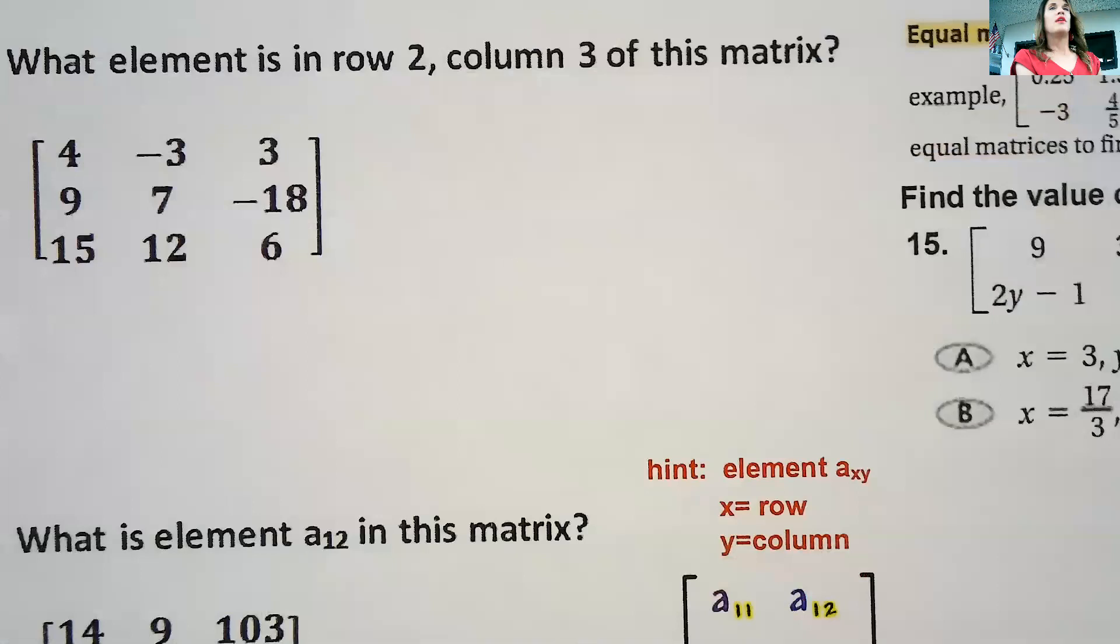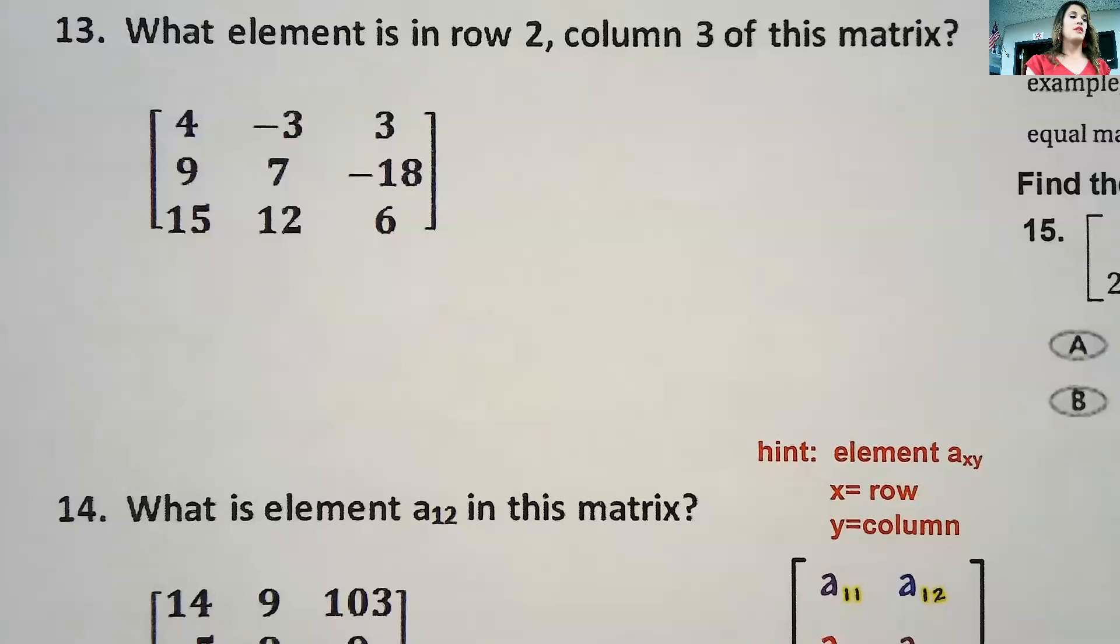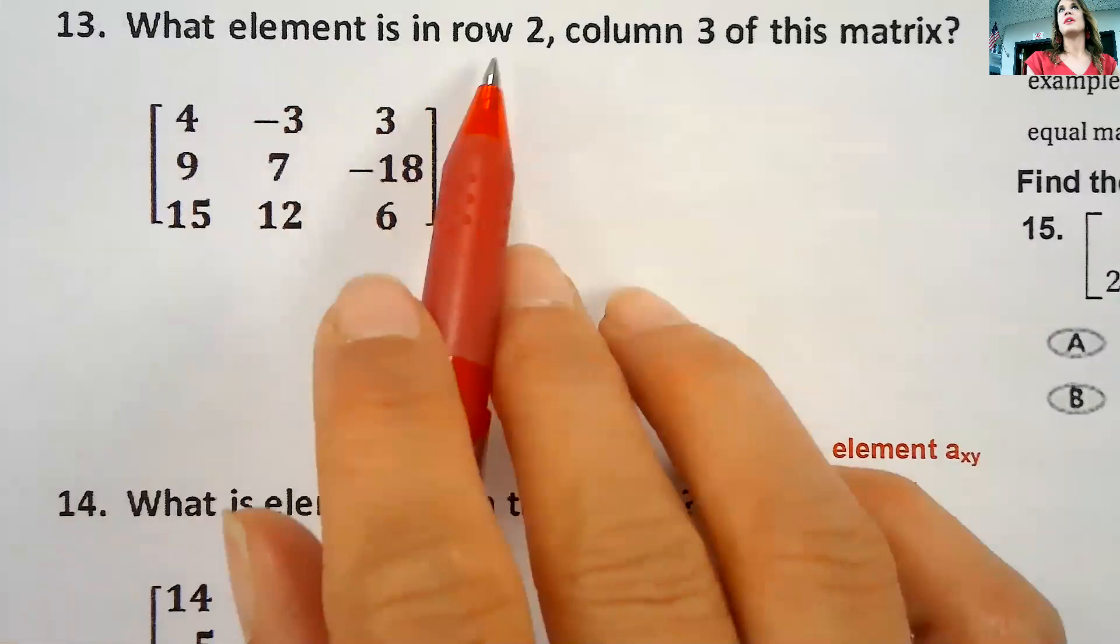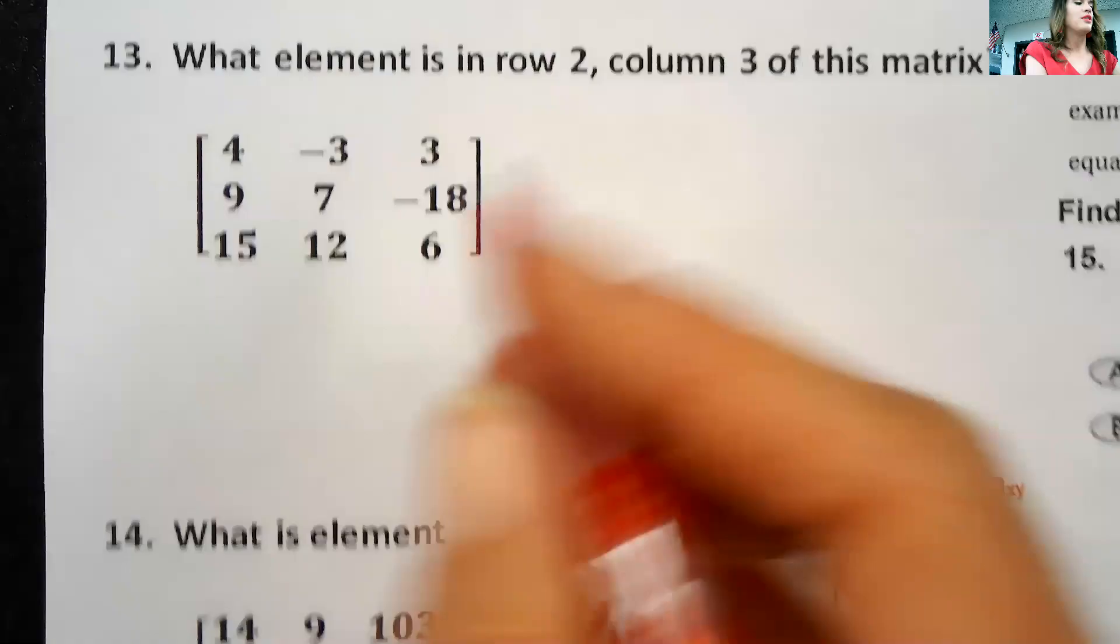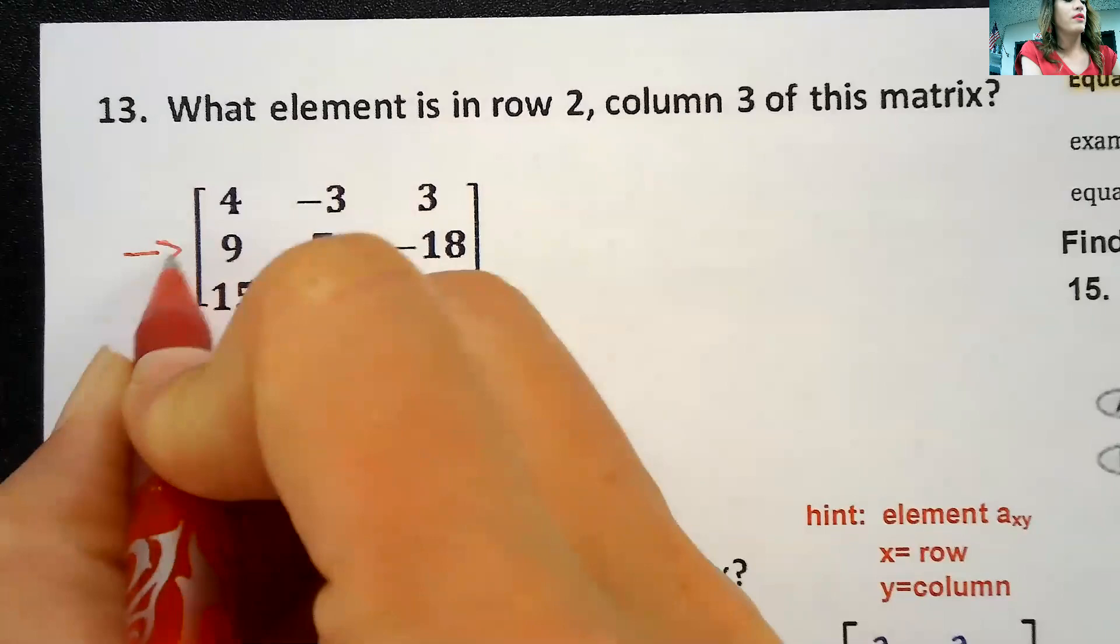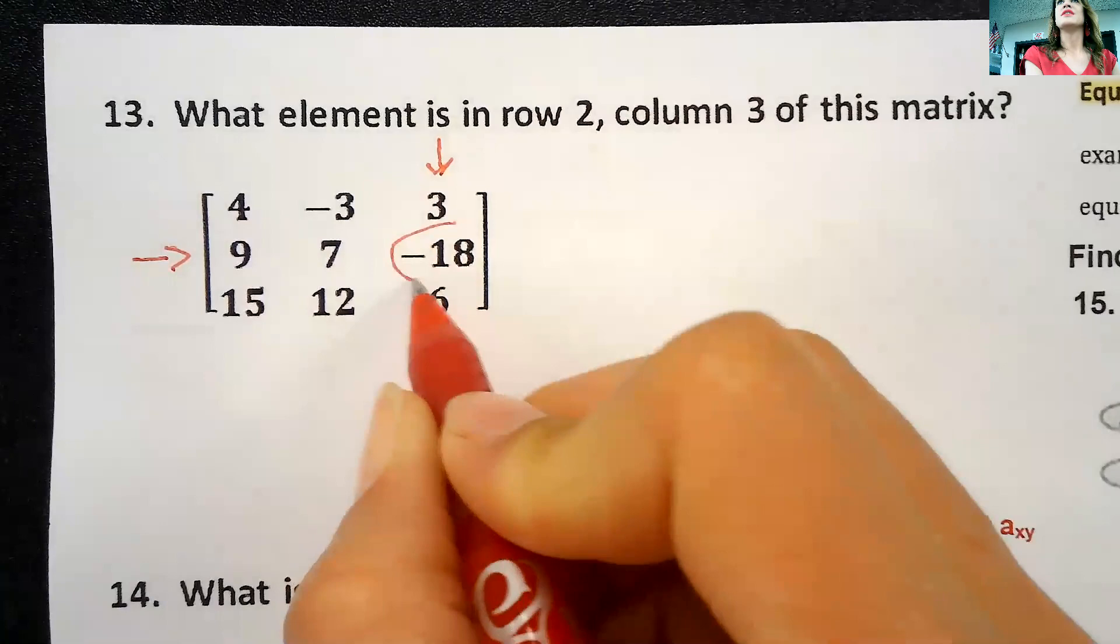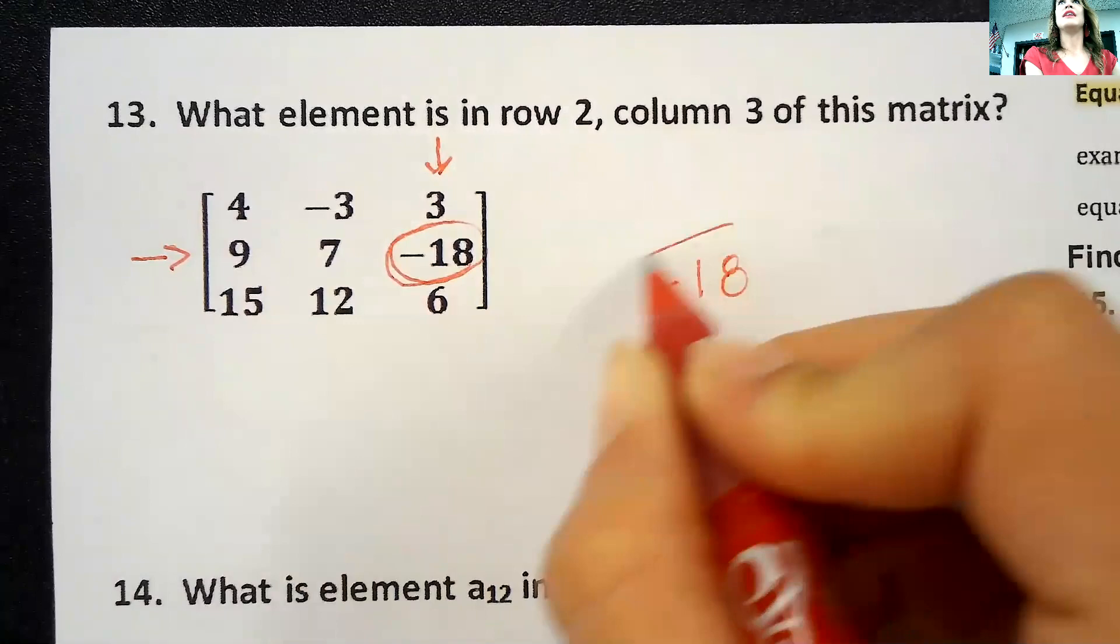You're going to get questions, you're going to do quizzes to practice this stuff on, and you're going to get questions where I ask you for elements. Ask you what element like this one is in row two, column three. So you go to the second row and to the third column and you see what is in that position. Right, it's the answer. This one would just be negative 18 is in the second row in the third column.